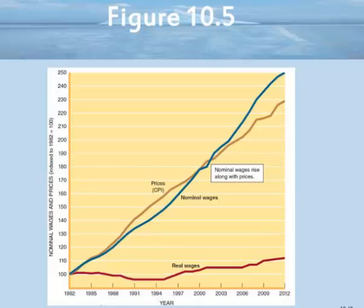This is a very helpful way to think about numbers. Again, in this panel, when the blue line is below the brown line, then the real wage has gone down. When the blue line is above the brown line, then the real wage has gone up.